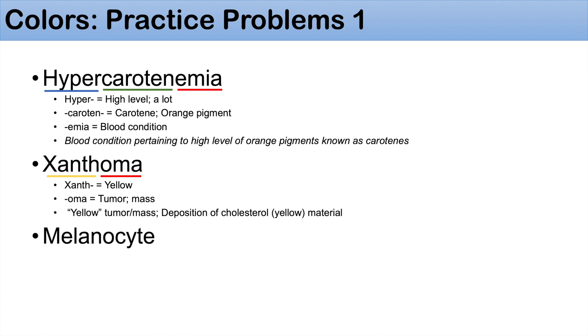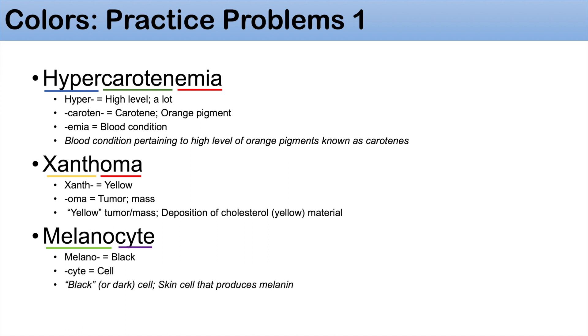The next word is melanocyte. The prefix melano means black, and the suffix cyte means cell. So melanocyte is literally a black or dark cell, and it really is a skin cell that produces melanin. The next practice problem is leukocyte. Leuko means white and cyte means cell, so a leukocyte is simply a white blood cell.